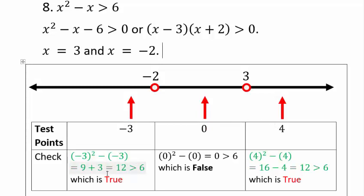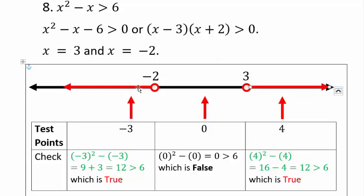Plugging negative 3 into x squared minus x gives 12. Since 12 is greater than 6, all points less than negative 2 are solutions. Plugging in 0 gives 0, and 0 is not greater than 6, so no point between negative 2 and 3 satisfies the inequality. Plugging in 4 gives 12, and 12 is greater than 6, so points beyond 3 are also solutions. The solution set is negative infinity to negative 2 union 3 to infinity.